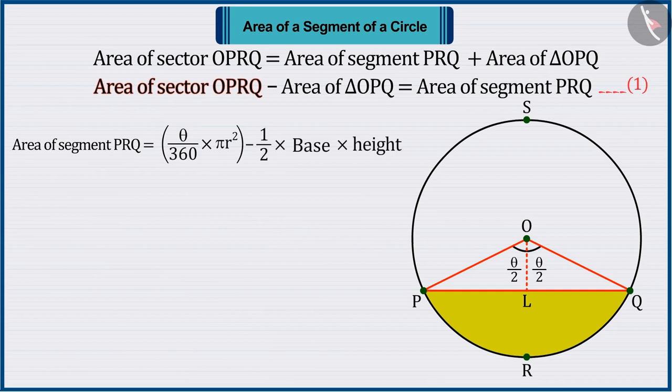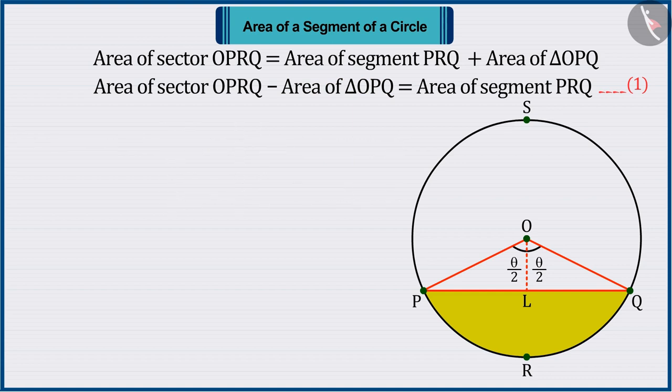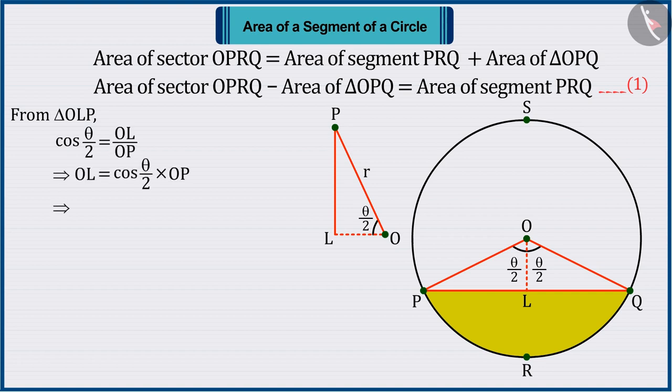In equation 1, the formula of area of sector is theta upon 360 multiplied by pi R square. And the area of a triangle is 1 upon 2 multiplied by base multiplied by height, where the base is PQ and the height is OL. If we talk about triangle OLP, cos theta upon 2 equals OL upon OP. From this, we get the length of OL as R cos theta upon 2.